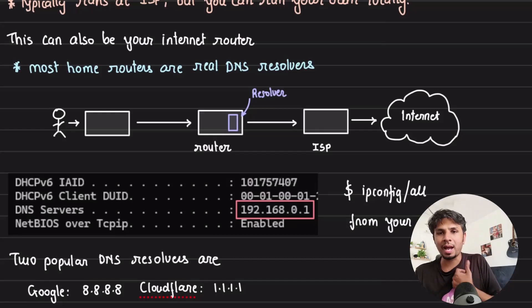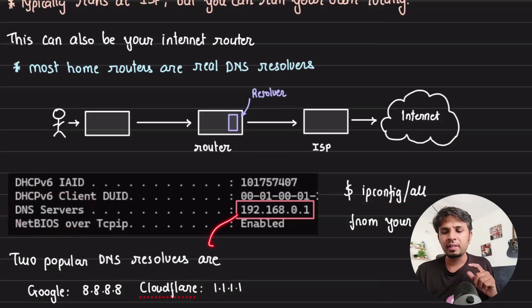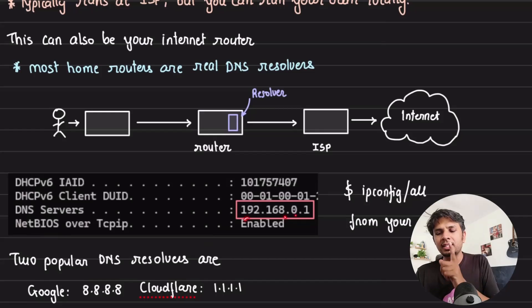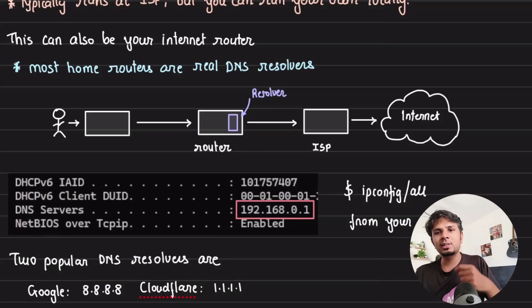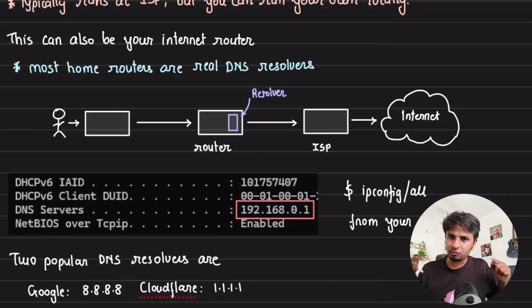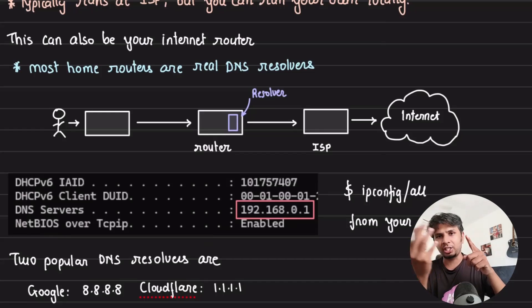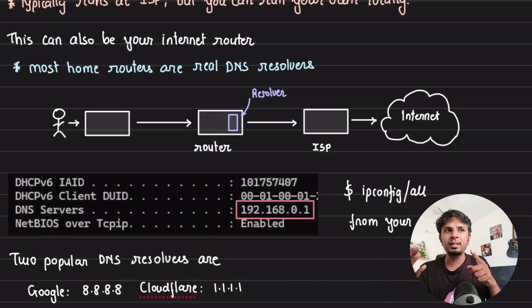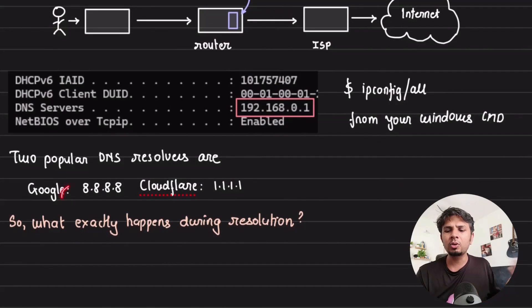If you're on a home Wi-Fi network, your router is capable of doing DNS resolution. I took a screenshot from my machine — on Windows, running ipconfig /all gives an entry called DNS servers, which contains the IP address of my DNS resolver: 192.168.0.1, the IP address of my router. So in my case, the router is doing DNS resolution and caching the domain name to IP mappings.